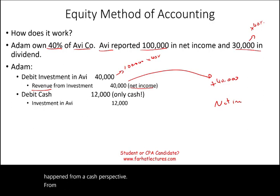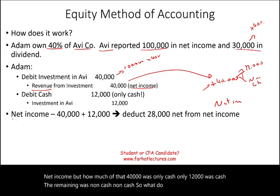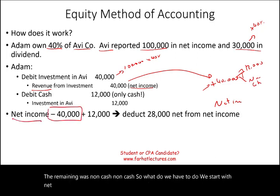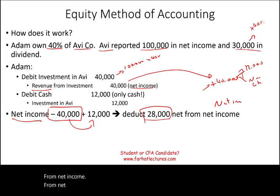For the dividend, we debit cash $12,000 (30,000 × 40%) and credit Investment in Avi $12,000. From a cash perspective, we added $40,000 which increased net income, but only $12,000 of that was cash — the remaining $28,000 was non-cash. So we subtract $40,000 and add back $12,000, deducting a net $28,000 from net income. This is how we deal with the equity method.